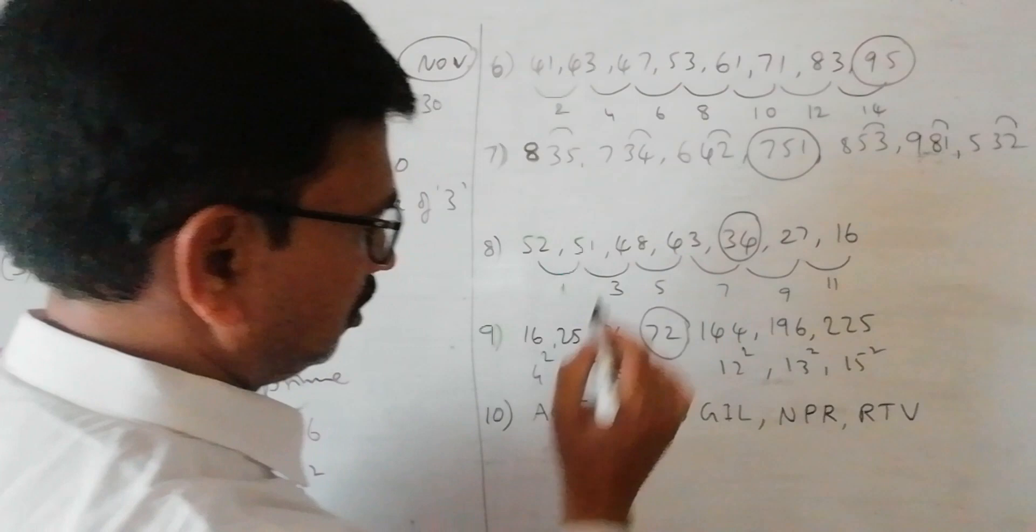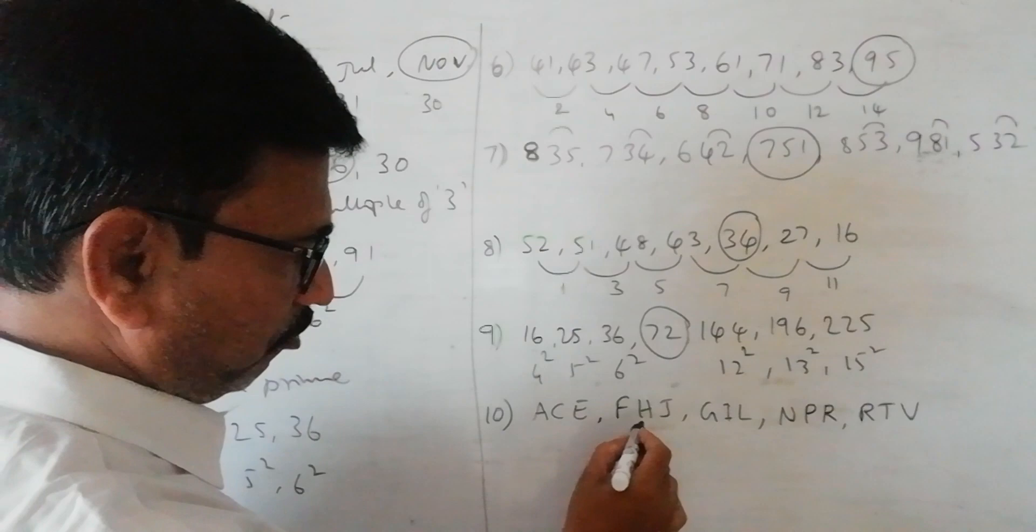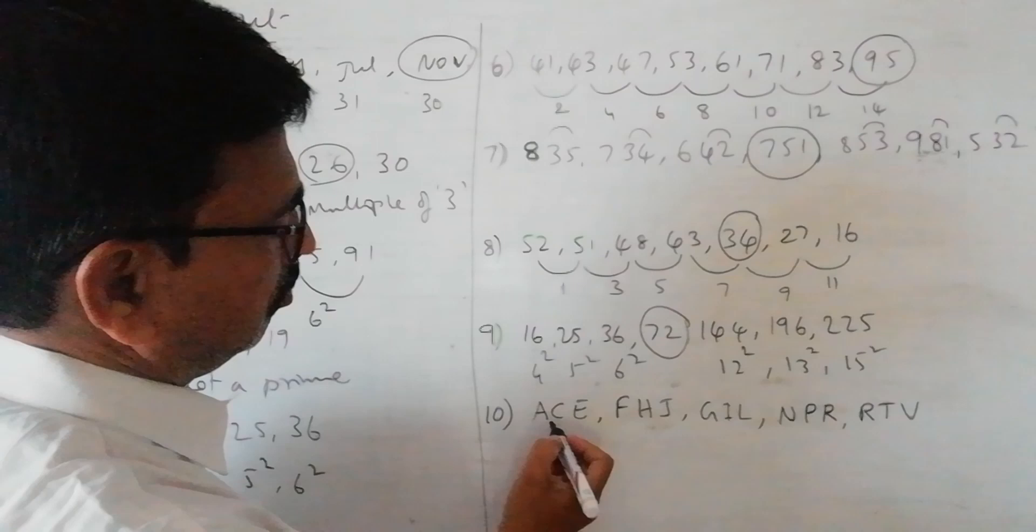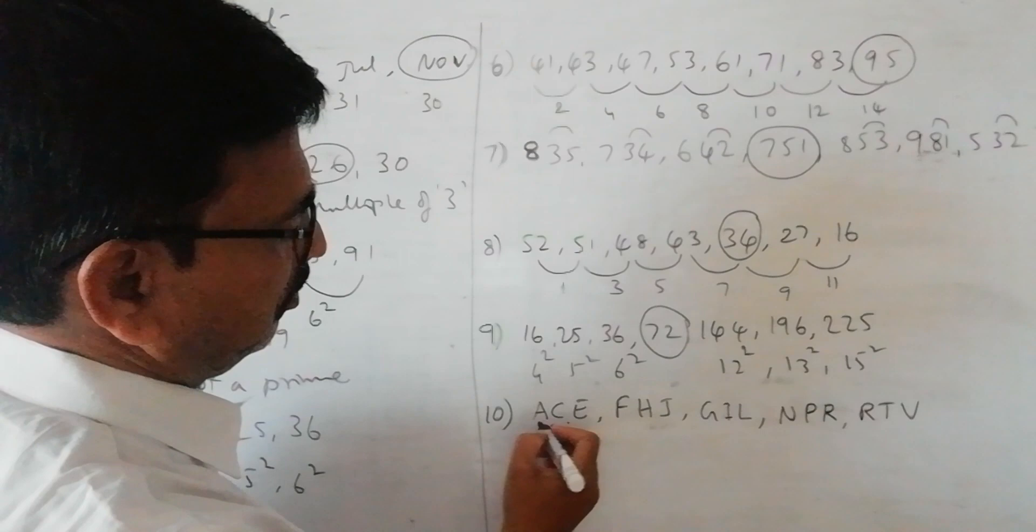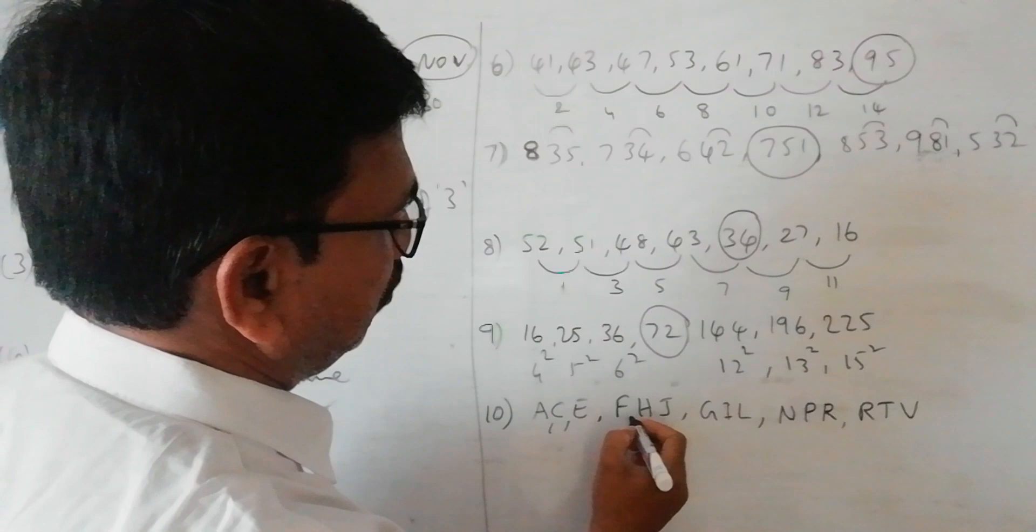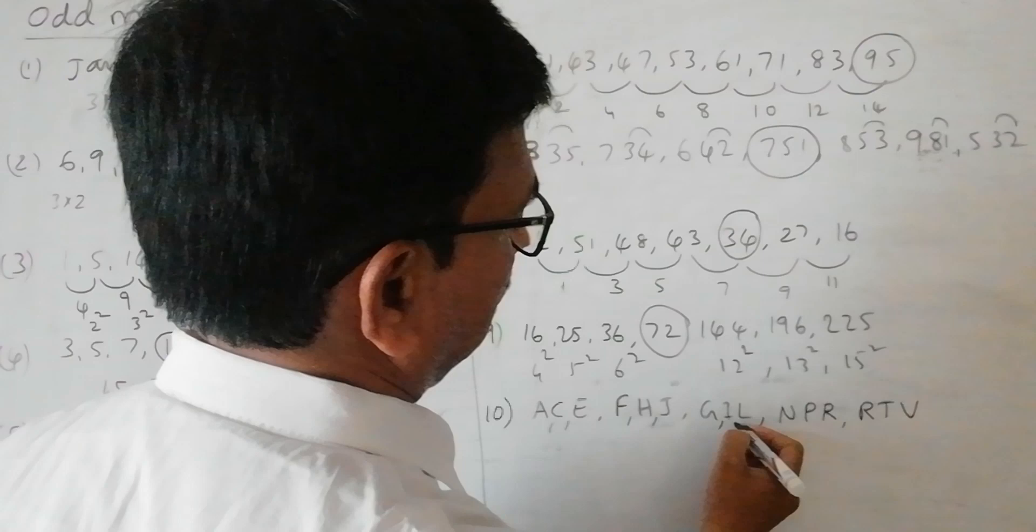And here if you observe A, C, E, F, H, J, G, I, L, N, P, R, T, V. Here if you observe, there is one letter missing in between. So A, B, C, B is missing. D is missing. A, B, C, D, E, B and D are missing here. F, G is missing, I is missing. Here G, H is missing. J, one letter should be missing but there are two letters missing in between.